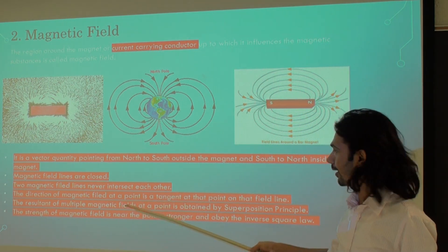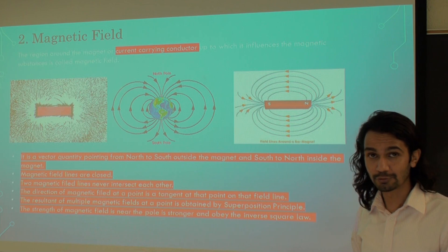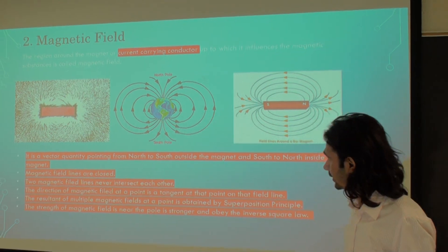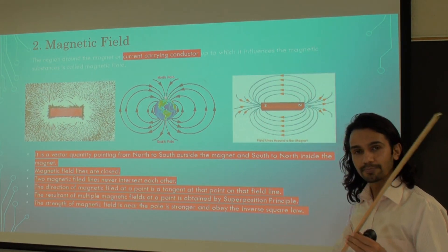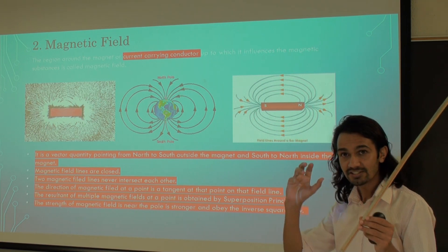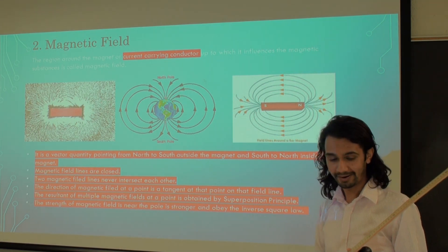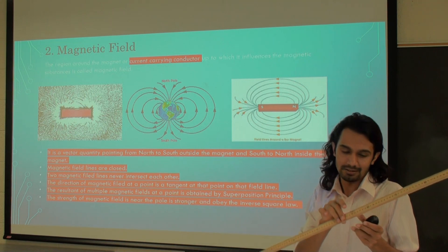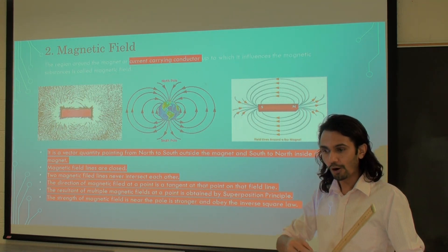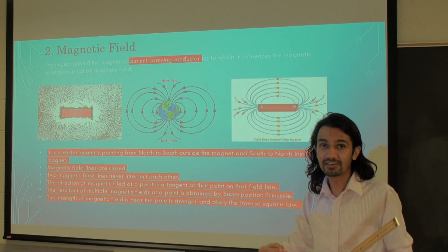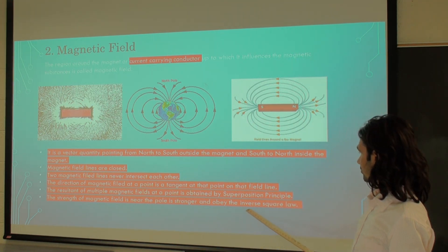If we have multiple magnets, we can find the total magnetic field by using the superposition principle — we use vector addition. The magnetic field strength is stronger toward the poles whereas it is weaker toward the middle region. As we move away from a magnet, the field strength becomes weaker, following an inverse relationship with distance.